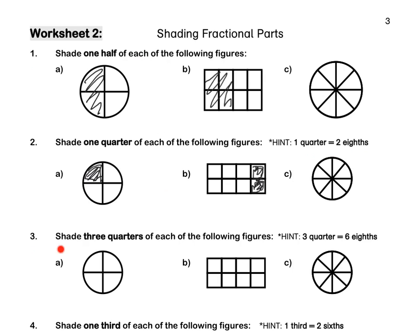Question 3: Shade 3 quarters of each of the following figures. Let's look at A — I'm going to shade 3 out of the 4 pieces. For B, in my top row I have 4 equal pieces and I'm going to shade 3 of them. For my bottom row, I have another 4 equal pieces and I'm going to shade 3 out of the 4 equal pieces.